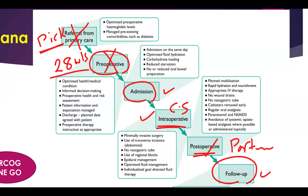When picking the patient, ask her: are you happy to join the Enhanced Recovery Program? If yes, she's in. Optimize her condition — check haemoglobin level, manage any pre-existing comorbidities like diabetes or hypertension. At 28 weeks, we have an appointment. The patient has to see the consultant, midwife, and anaesthetist. We need to check haemoglobin and, if the patient has anti-red cell antibodies like anti-C or is RH negative, measure the antibody titre. We can give iron supplementation if needed.